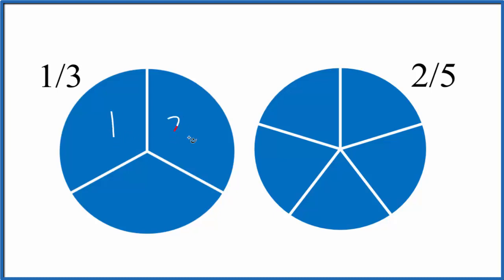If we number it, one, two, three, each one of these pieces is one-third. It's one part here of the whole. Over here we have five pieces. Each part is one-fifth.